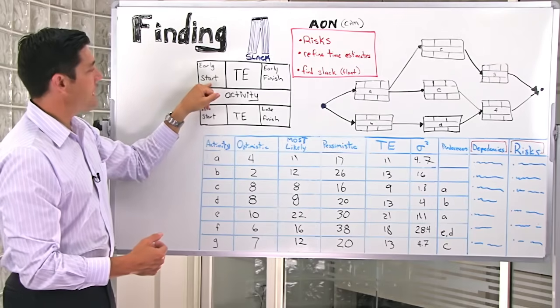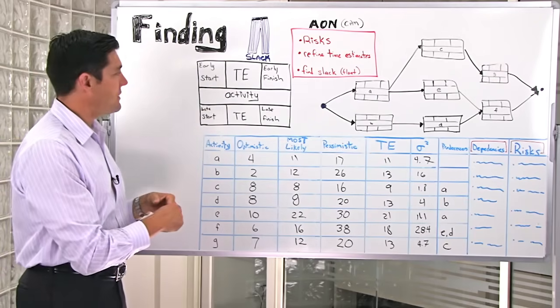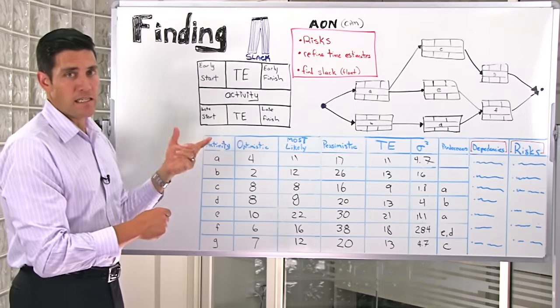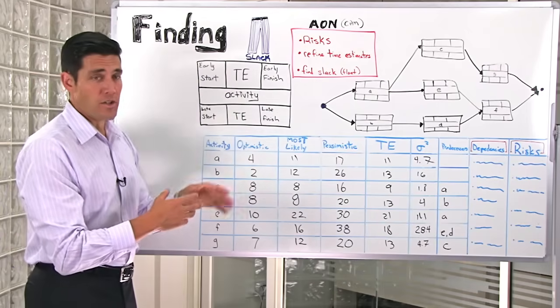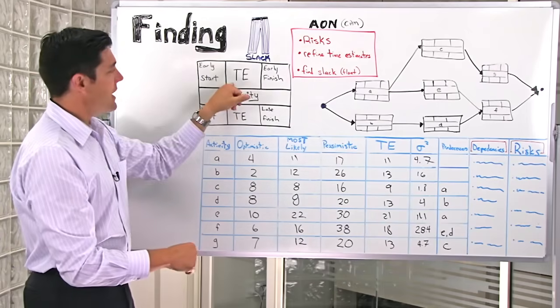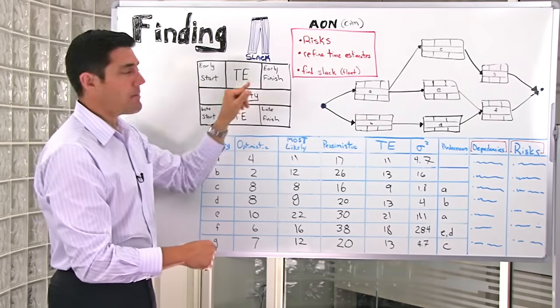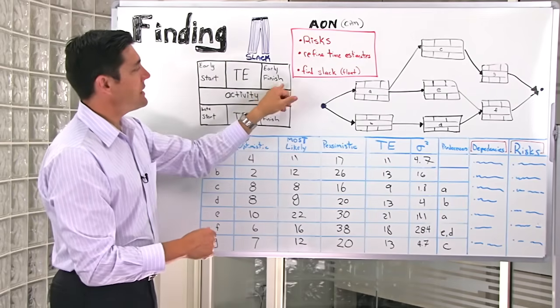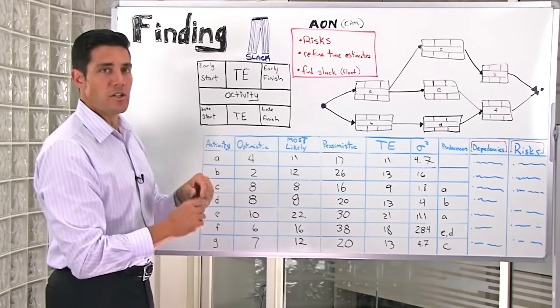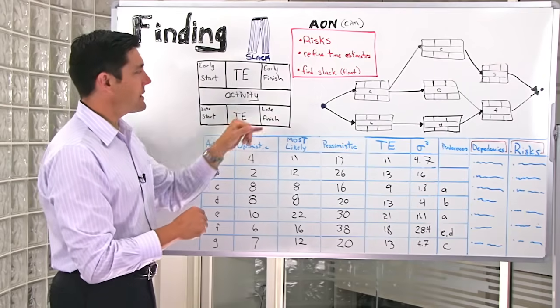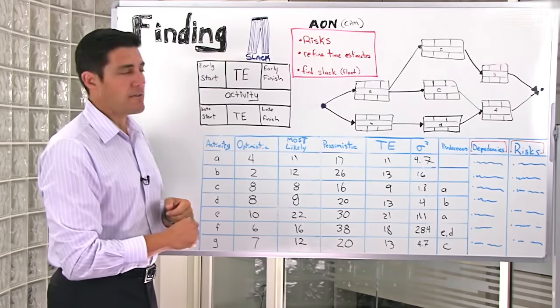Let me explain these different areas. In the top left part of the Node, we've got the early start of that particular activity. That's the earliest time that activity could start going through the project in a forward pass. Then we've got our expected time for that particular task, and we list the early finish. The early finish is simply the early start plus the time expected, and you can calculate the earliest finish.